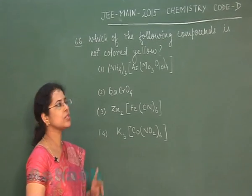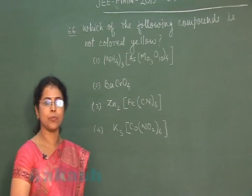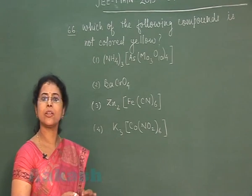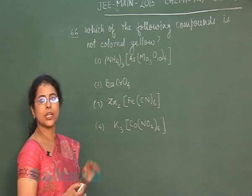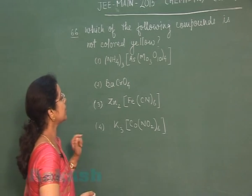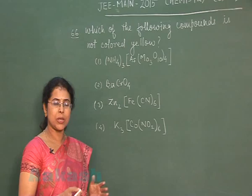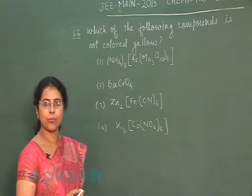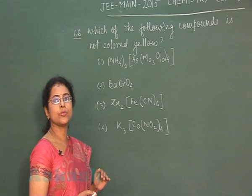The first option is a compound of molybdenum. Most compounds of molybdenum are yellow colored, and this compound is also yellow colored. The second option is barium chromate, which is also a yellow colored compound.